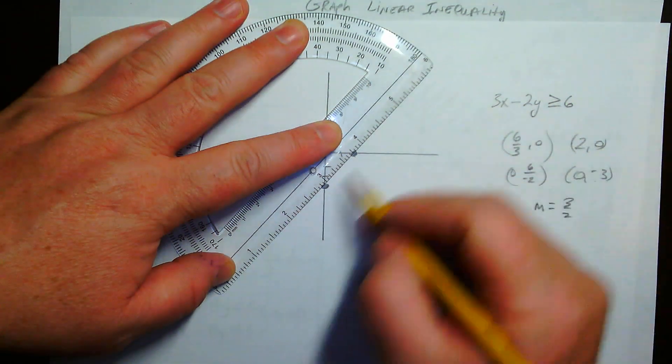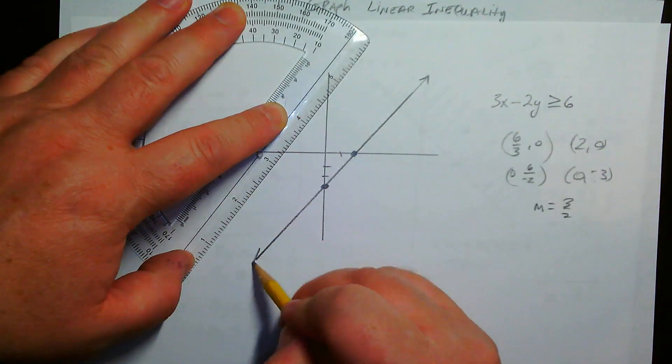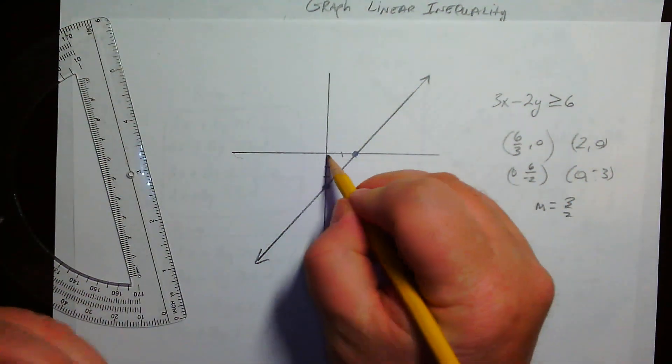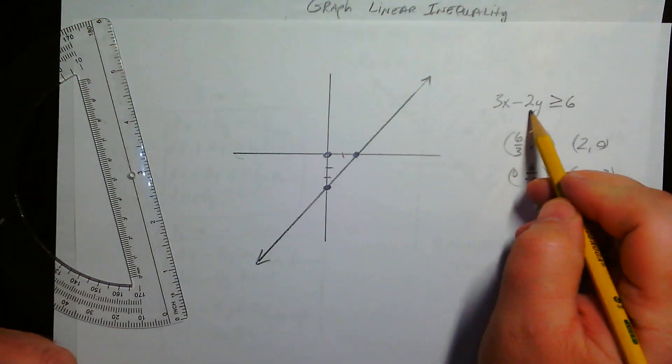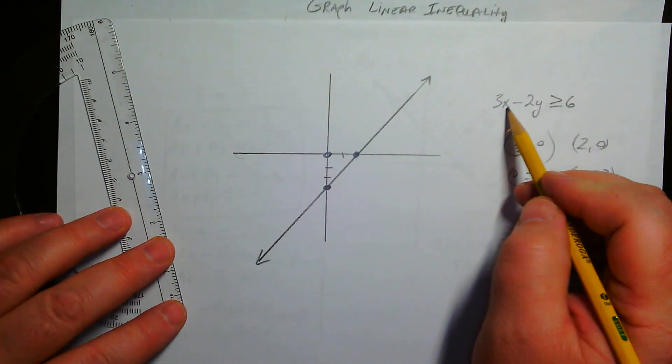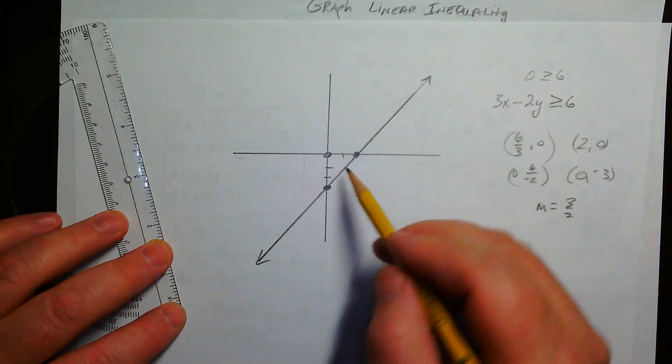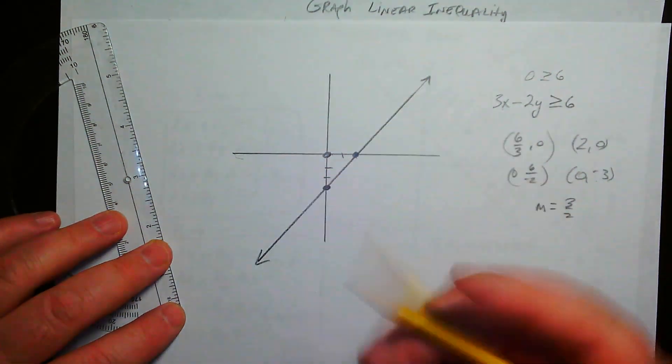So anyway, plot your points. Figure out what kind of line it is. This one's solid. Now, again, I usually just pick a number, plug it in, like 0, 0. I can plug in 0, 0, and I can see that it's obviously not true because 3 times 0 minus 2 times 0, well, that's just 0, and 0 is not more than 6. That's false. So this is false, so it's not shaded below.